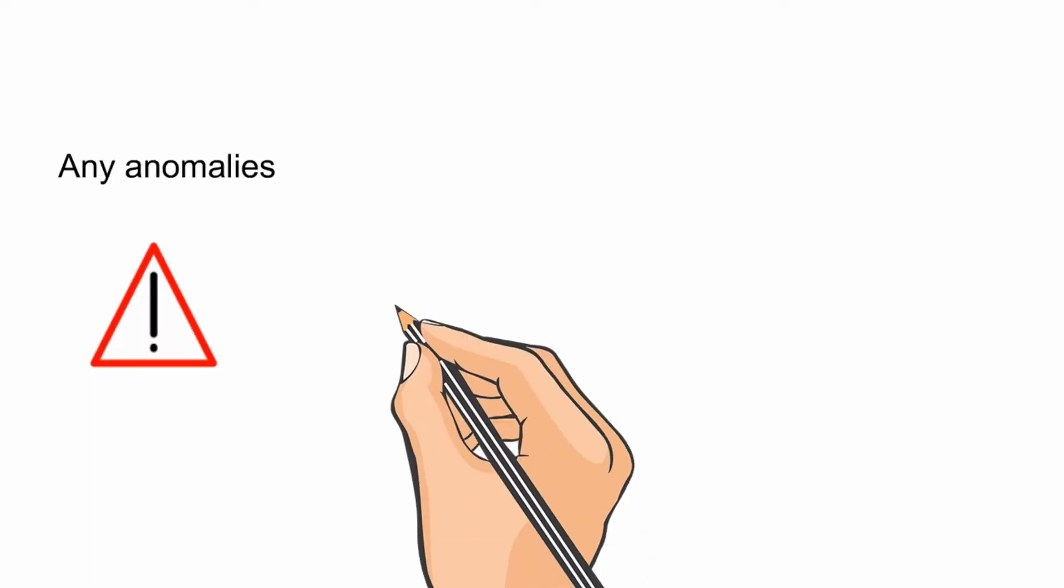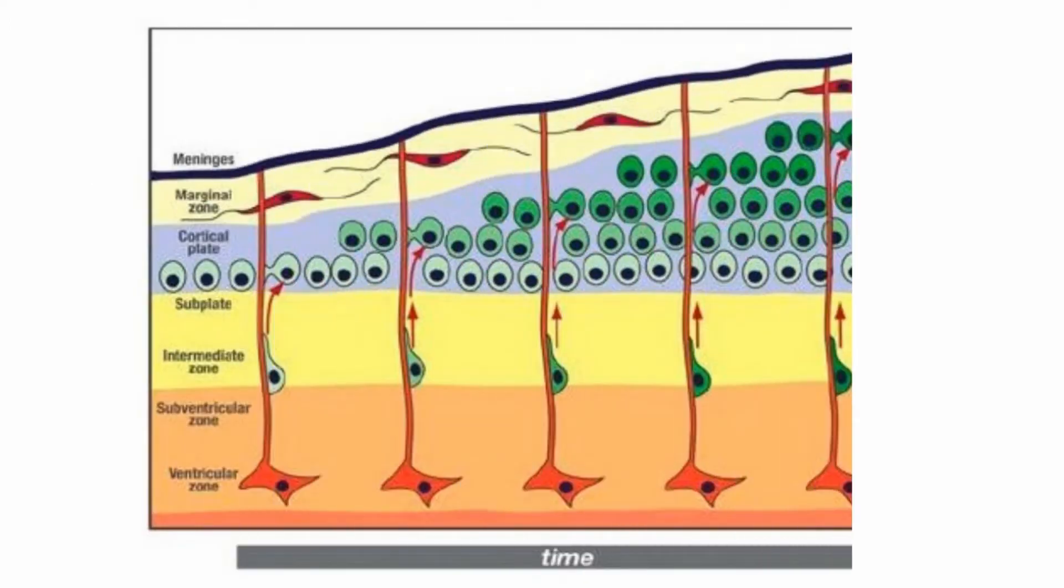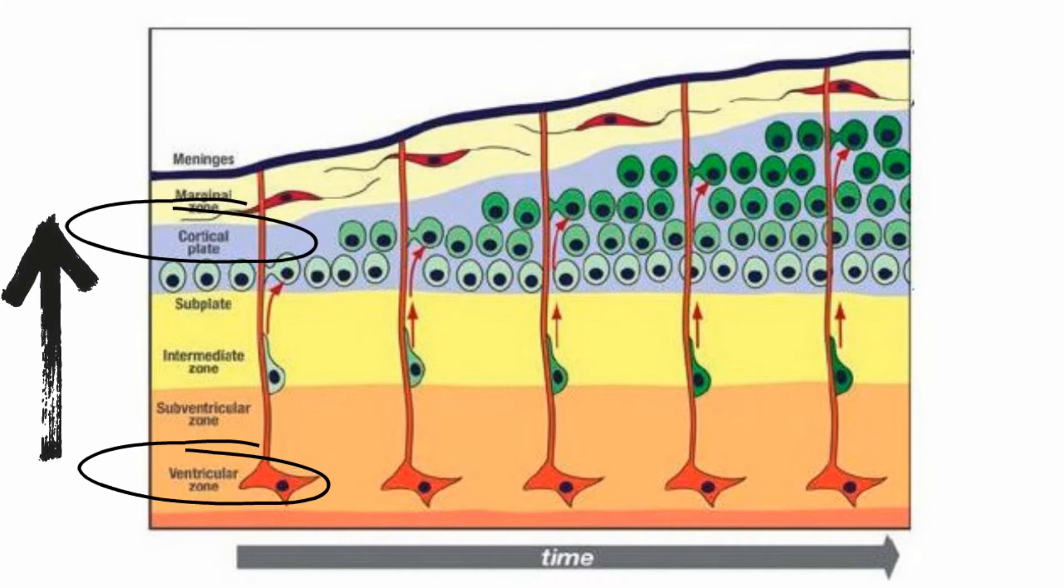Any anomalies during this process result in a variety of cortical malformations, which are called neuronal migration disorders. More than 25 neuronal migration disorders have been described in humans. Remember that normally the neurons should migrate from the ventricular zones to the cerebral cortex.